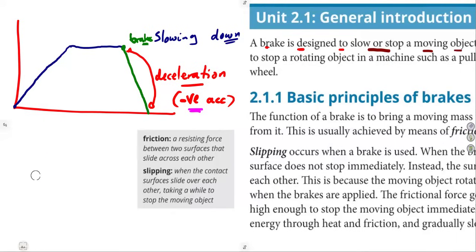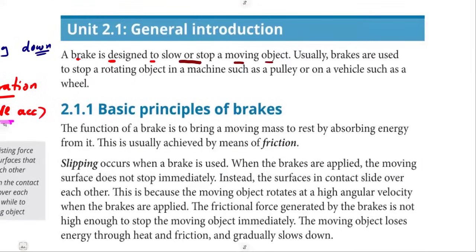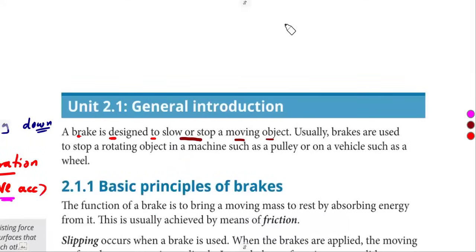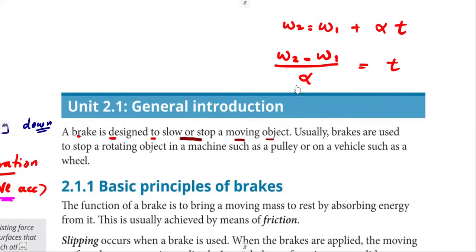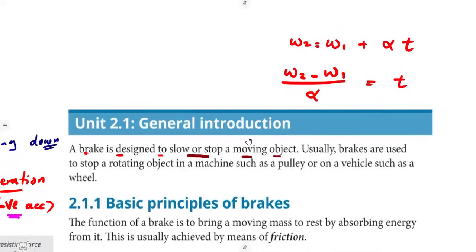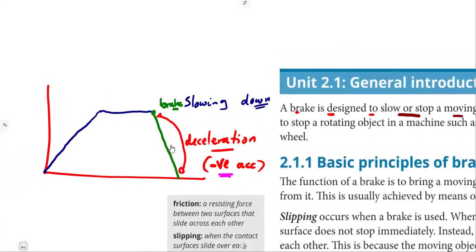Whenever we do our calculations, the acceleration we use will be taken as a negative. Some textbooks change the formulas just to accommodate this topic, but the right thing is just acceleration used as a negative. If you know that final speed — when dealing with angular speed — is equivalent to omega-1 plus alpha-t, you will find textbooks now start with omega-1 minus omega-2 to avoid using negative. I'll elaborate more when we do the calculations.